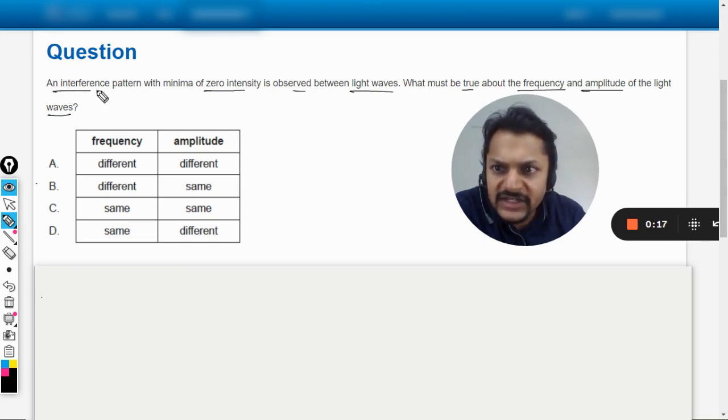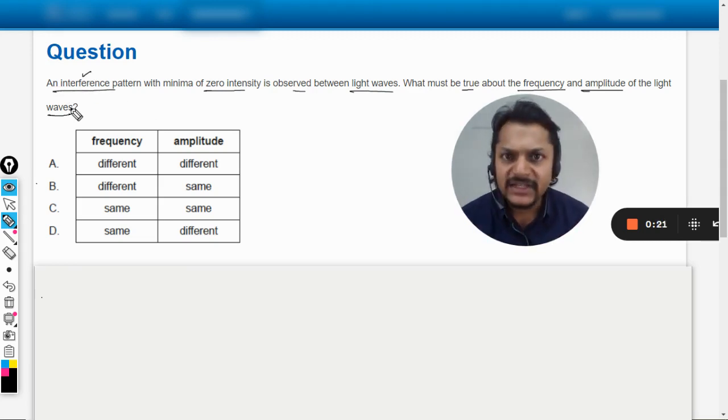First of all, it is given that interference is taking place. When interference takes place, intensity redistribution occurs at the screen, so some points become bright and some points become dark.